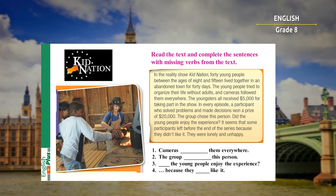Now let's check. Look at sentence number one: Cameras followed them everywhere. Sentence number two: The group chose the person. Sentence number three: Did the young people enjoy the experience? Sentence number four: Because they didn't like it. Well done.